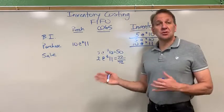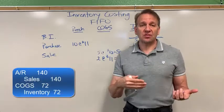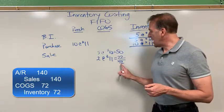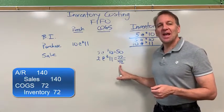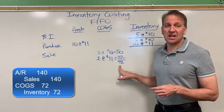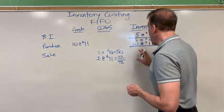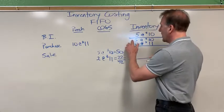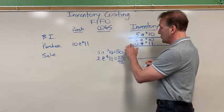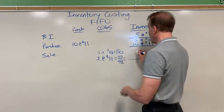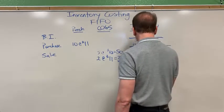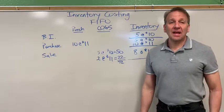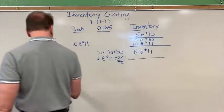So the journal entry would be: debit accounts receivable, credit sales for $140; and debit cost of goods sold $72, credit inventory $72. Now we figure out the ending inventory balance. We got rid of all five of the $10 ones, and we sold two of the $11 ones, so we have eight left at $11 each.